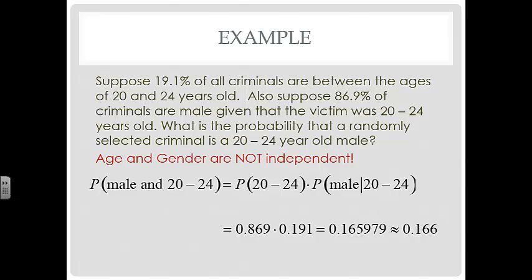Here your population is all the criminals. In the previous problem, the population was just the 20 to 24 year old criminals. But in this case, the population is all the criminals — any age, any gender. And we want to know what's the probability that a randomly selected criminal out of the entire population is going to be male and 20 to 24 years old.